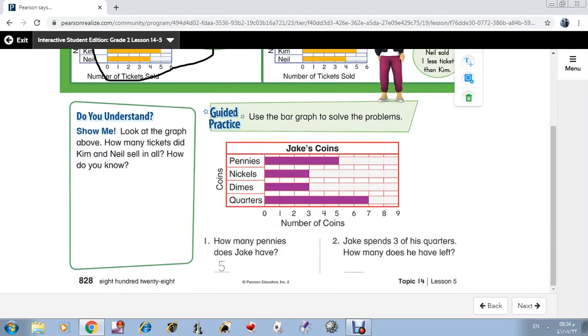Let's try. Here, use the bar graph to solve the problem. Number 1: How many pennies does Jake have? It's very easy to know this. Here, 5. Yes. So the answer is 5.